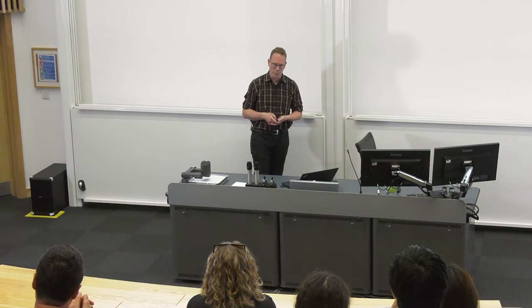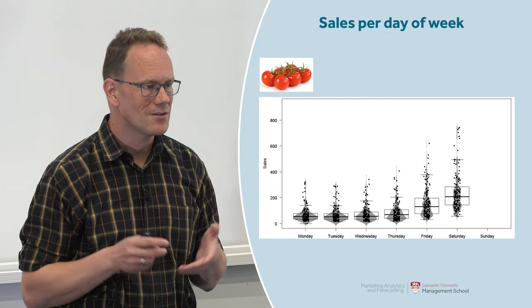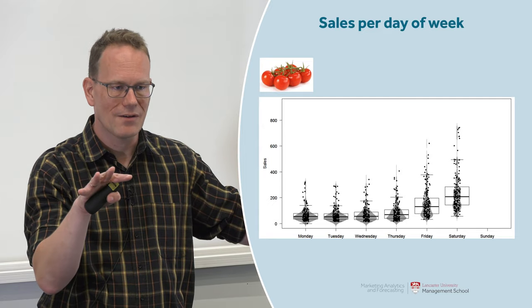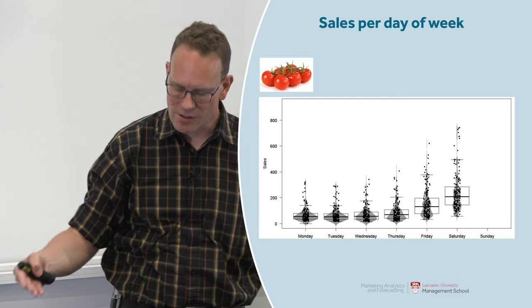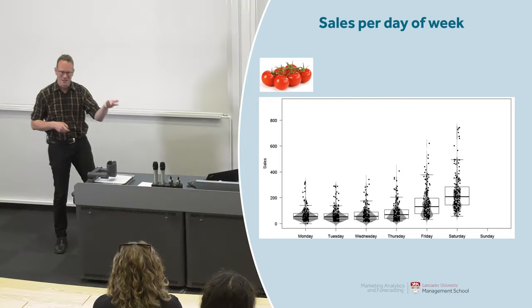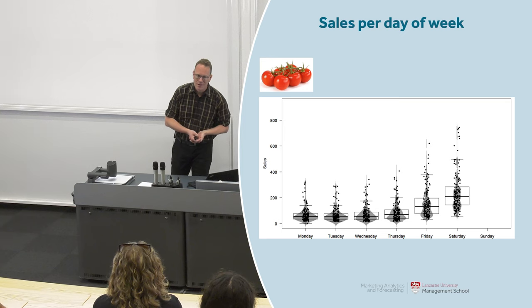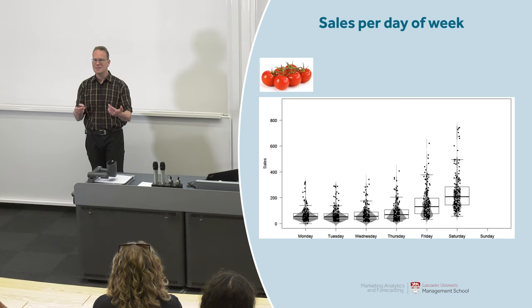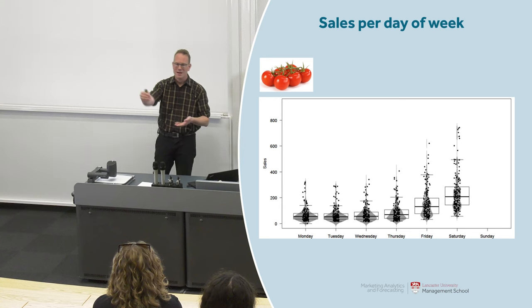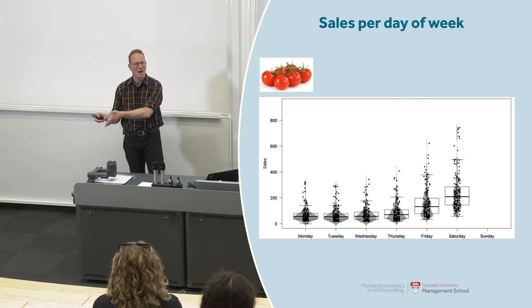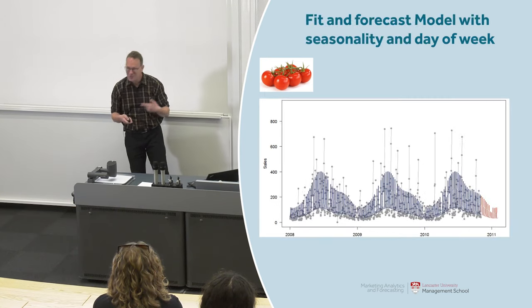There are also other dynamics at work. If we plot this time series not as a time series but against the day of the week, an interesting pattern emerges. We see a certain level of sales Monday through Thursday, then higher sales on Friday and even higher sales on Saturday, and no sales at all on Sunday because the store is closed. That's a completely standard pattern in retail because people do their weekly shopping on Friday after work or on Saturday morning. The retailer needs to keep that in mind, otherwise they'll put too many tomatoes in the store early in the week and not enough on Friday and Saturday.